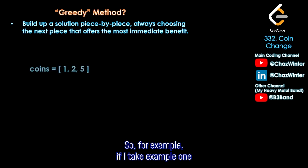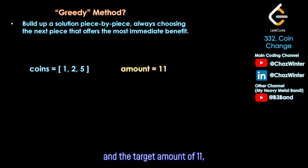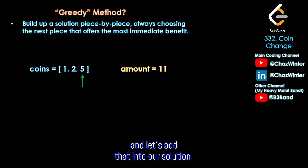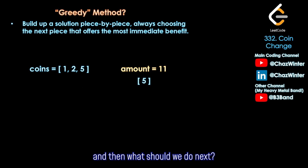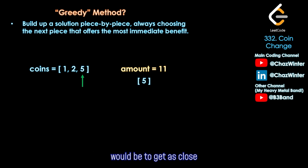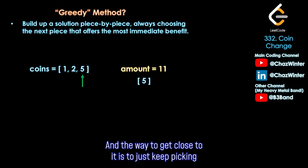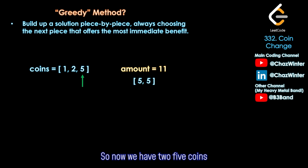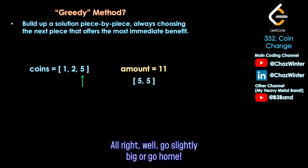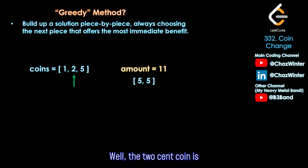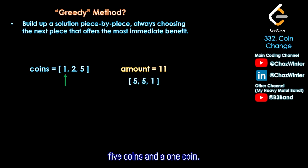For example, take example one from LeetCode — coins 1, 2, and 5 with a target of 11. A greedy solution says go big or go home: pick the biggest coin, which is 5. Then pick 5 again. Now we can't pick 5 again, so we pick the next biggest that fits, which is 1. We end up with two 5-cent coins and a 1-cent coin, which adds up to 11 — and in fact, this is the optimal solution.